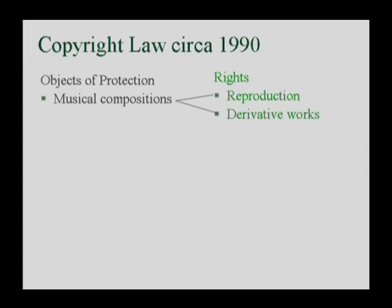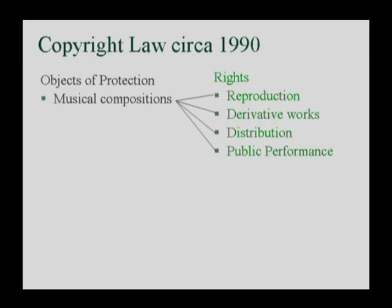Second, the holder of the copyright has an exclusive right to prepare derivative works — new arrangements of the music, for example. Third, the copyright owner has the exclusive right to distribute the product to the public, by sale or otherwise. And finally, the holder of the copyright has the exclusive right to publicly perform it.